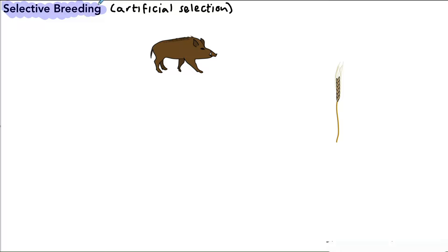Now why do we use selective breeding? Well, it's to produce animals or plants that have particular characteristics that we want. So in our example here we have a wild pig, and this actually is not the kind of pig you see on a farm.